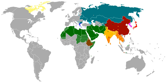Every human community possesses language, which many regard as an innate and defining condition of humanity. However, the development of writing systems, and the process by which they have supplanted traditional oral systems of communication, have been sporadic, uneven, and slow. Once established, writing systems generally change more slowly than their spoken counterparts, and thus they often preserve features and expressions which are no longer current in the spoken language. One of the great benefits of writing systems is that they can preserve a permanent record of information expressed in a language.